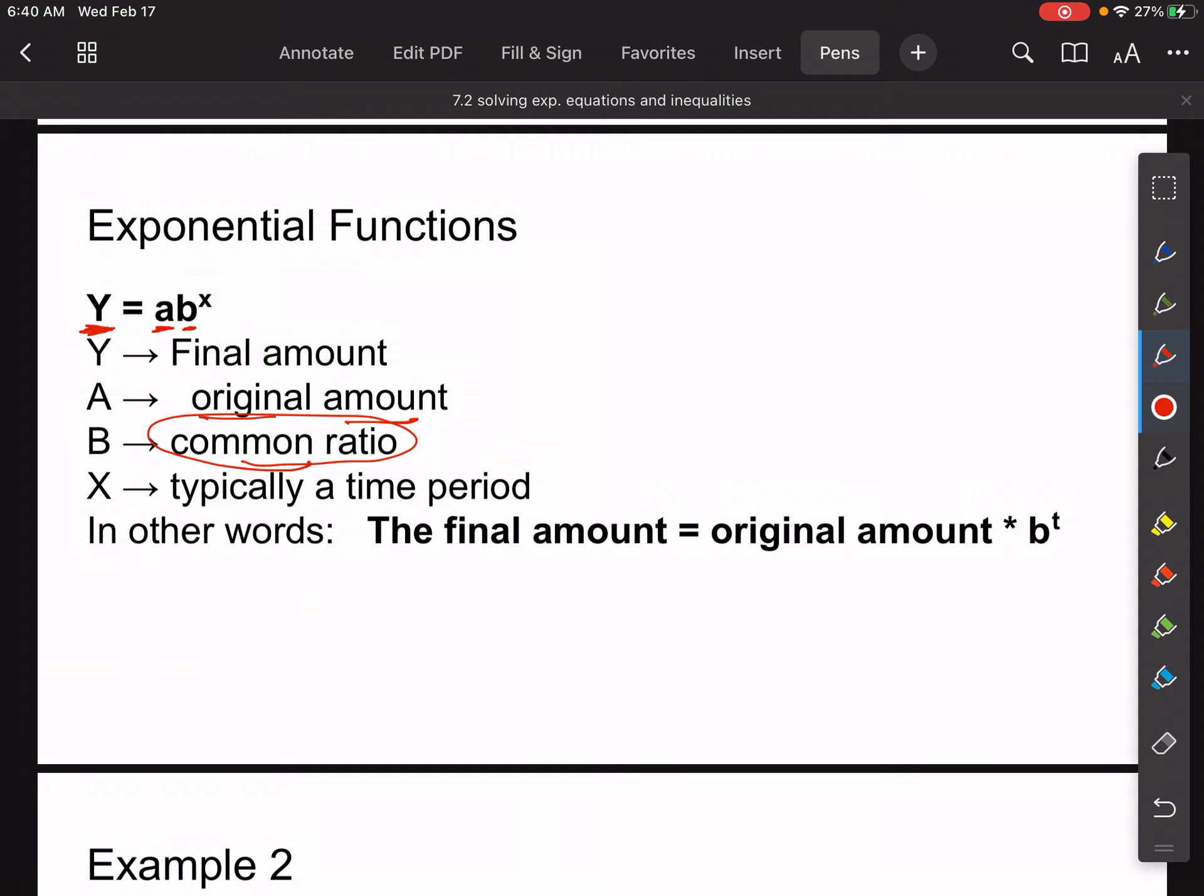And the common ratio, we're going to spend some time finding this in the next problem. But essentially, it's how the thing is acting over a period of time. So it's a common ratio of how something's acting over time. So if you start with a beginning amount, say we start with like $2 and we end with $10 and we do this over a period of eight years, it's going up by a dollar a year. So that pattern becomes part of the common ratio, which I'll show you in just a minute. And then x is typically a time period, almost always going to be a time period.